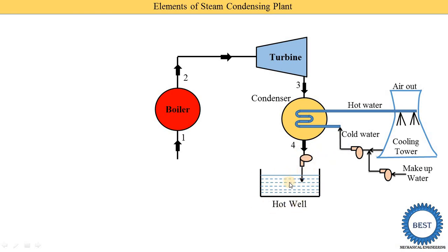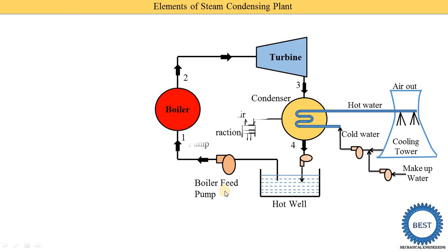In the hot well, the water is collected, and this water is again supplied to the boilers by using the boiler feed pumps. The next component is the air extraction pump. We need to maintain the condenser pressure below atmospheric pressure — this is called vacuum pressure. So we need to remove the air from the condenser, and for that purpose we use the air extraction pump.